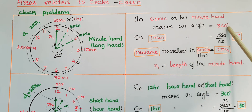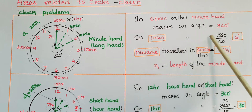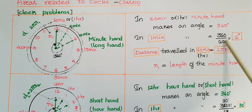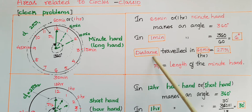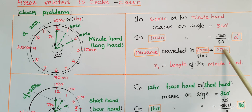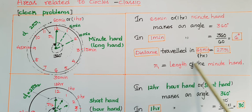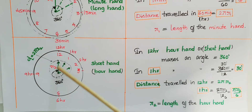So in 60 minutes a minute hand makes an angle of 360 degrees. In one minute it makes an angle of 360 divided by 60, that is 6 degrees. The distance traveled in 60 minutes by the minute hand is 2πr1, where r1 is the length of the minute hand.